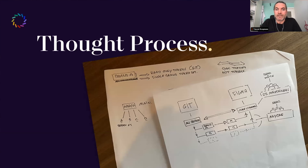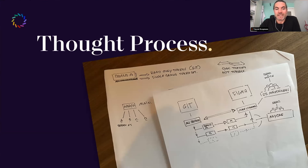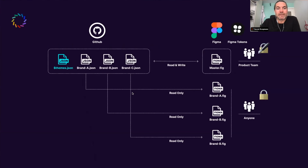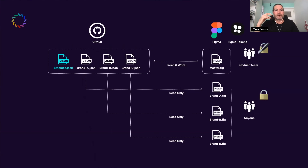The thought process started with sketching out on paper — what should this be? I had some communication with Mike about this a few months back to validate the approach. What I came up with was this mind map of how it should work. On the right side in Figma: a main master file which holds basically all the themes — all the brands and all the dark modes — which the product team owns. The product team then becomes the design system team, and they have read and write rights to the tokens. Below that you can see the brand-specific files — different countries that do their own UX research and their own prototyping.